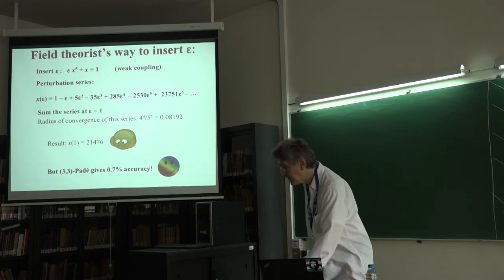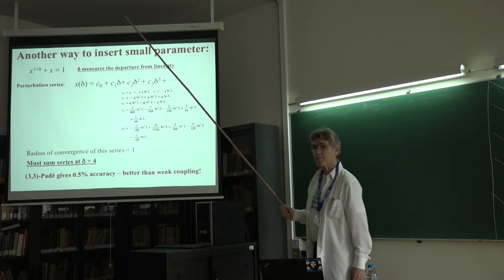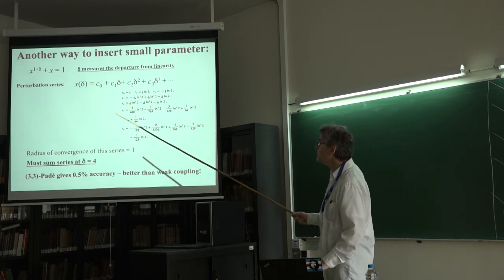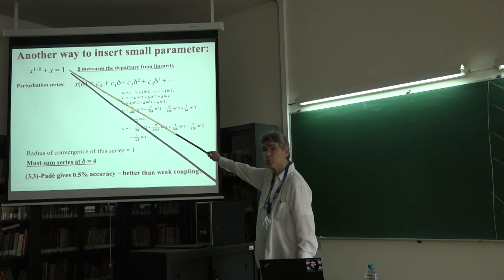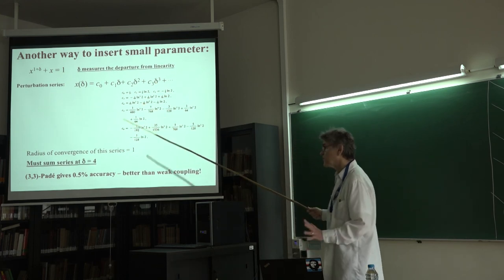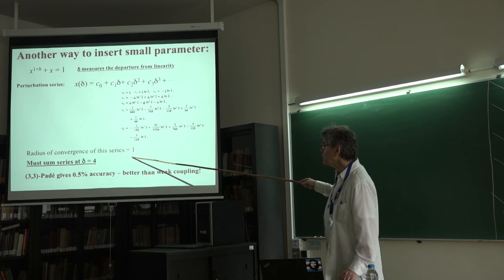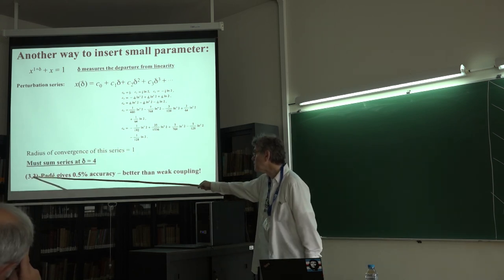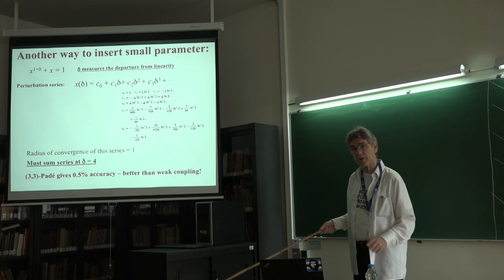There's another way to do perturbation theory: put a small parameter in the exponent — call it delta — which measures how nonlinear the equation is. At delta equals 0 the equation becomes linear and you can solve it exactly. If you expand in powers of delta, these are the coefficients you obtain. The radius of convergence of the series is 1, so since you have to sum at delta equals 4, you use Padé. A 3,3 Padé with the same 6 terms gives 0.5% accuracy, which is better than weak coupling.